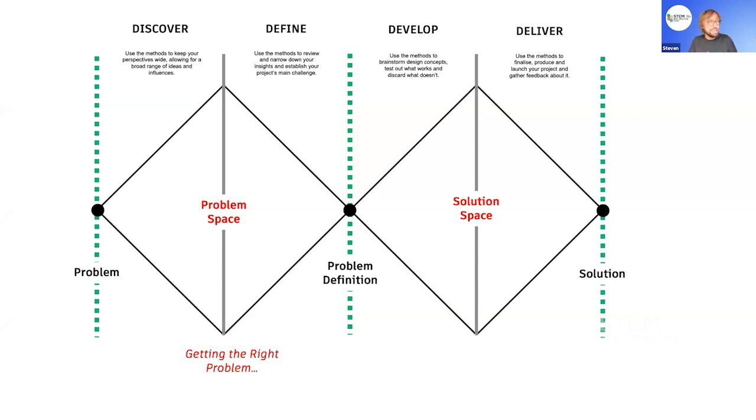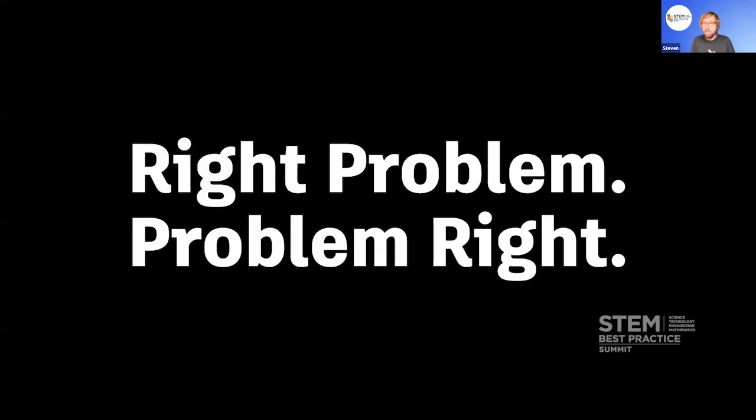The big thing from the double diamond here is with your students, you need to get them to go backwards into the problem space before they move into the solution space. I see an awful lot of things happening in the solution space before they fully understand the problem. And the problem with this is it constrains their thinking, like Apple and like the industry was back then. We call that getting the problem right.